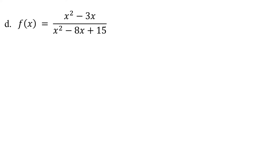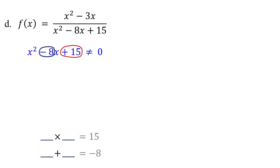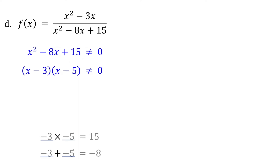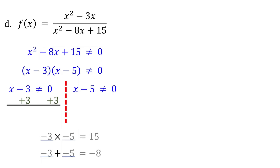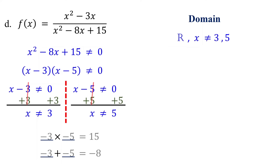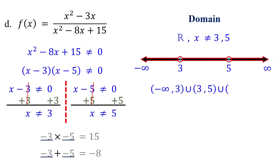Now it's your turn — please pause the video and give it a try. For this function to be defined, the trinomial must not equal zero. To solve this inequality, first factor the trinomial. Find two numbers that multiply to give 15 and add up to negative 8 — these numbers are negative 3 and negative 5. So when we factor, it becomes x minus 3 times x minus 5. Setting each factor not equal to zero and solving for x, we find that x cannot equal 3 or x cannot equal 5. Therefore, the domain is all real numbers except 3 and 5. Mark open circles at 3 and 5, shade the rest of the line, and write the domain in interval notation.